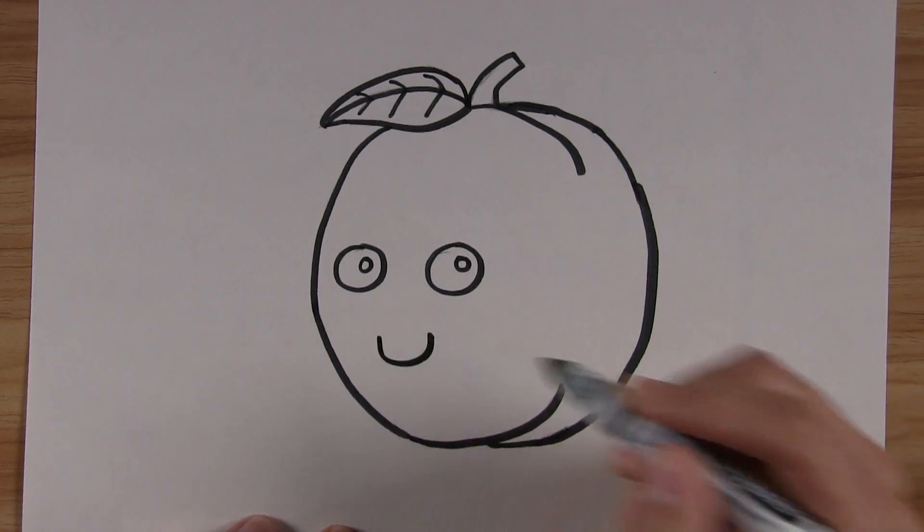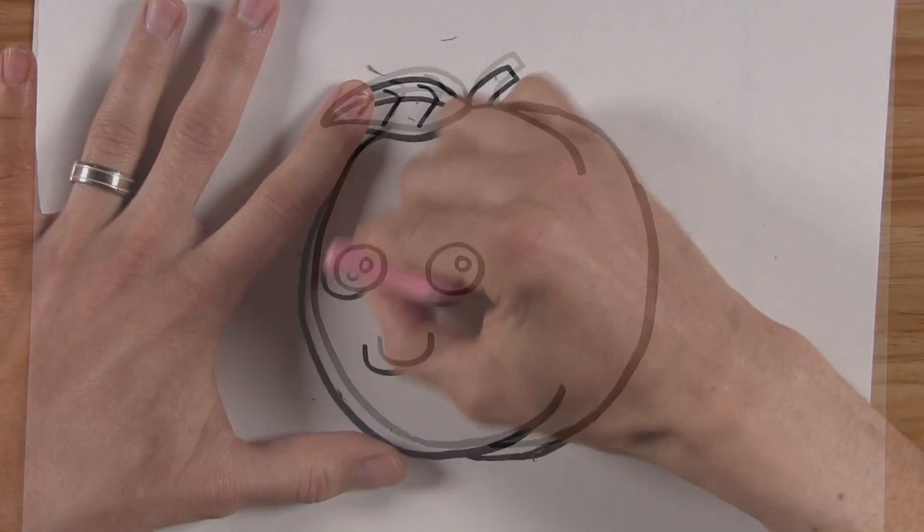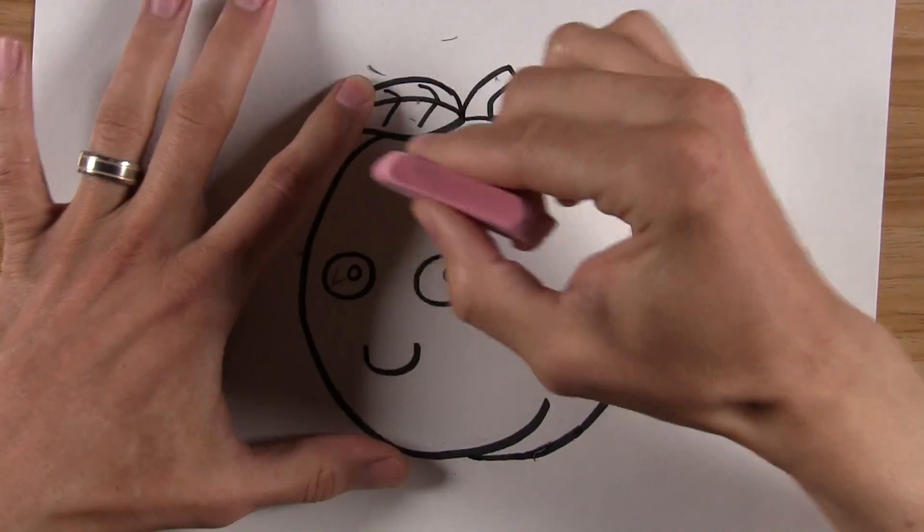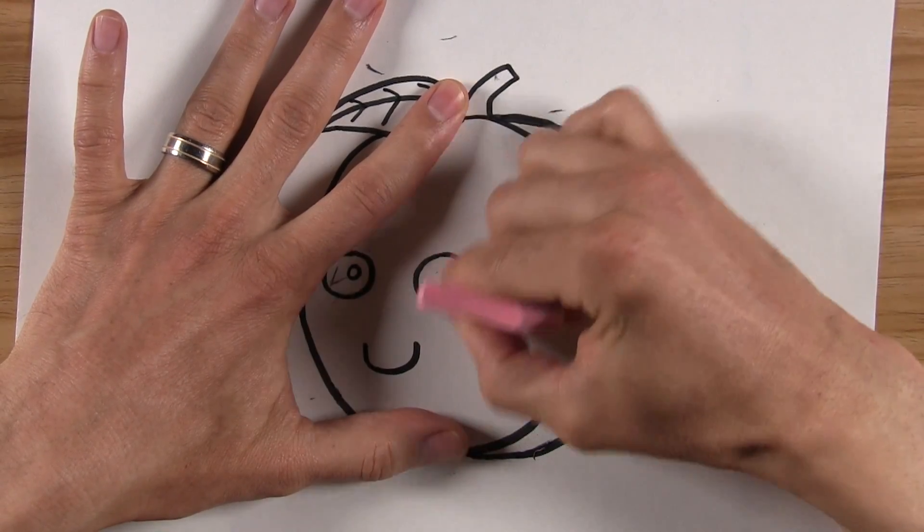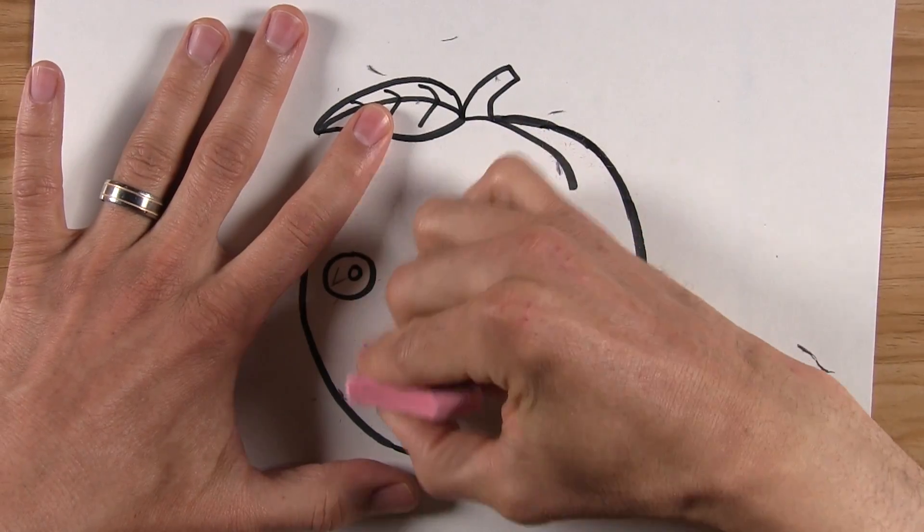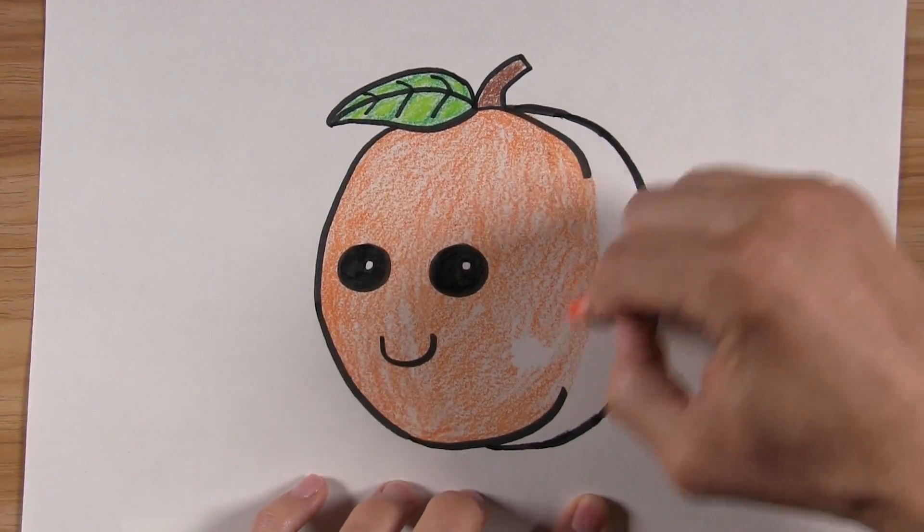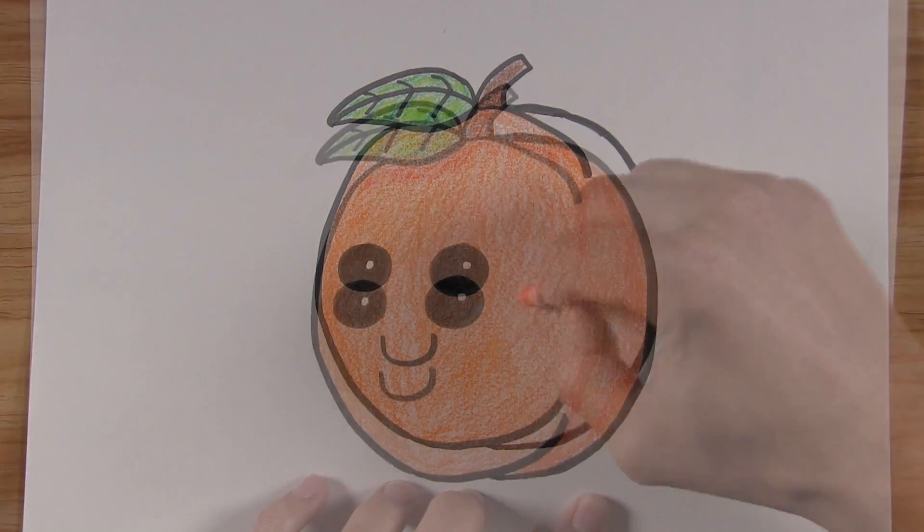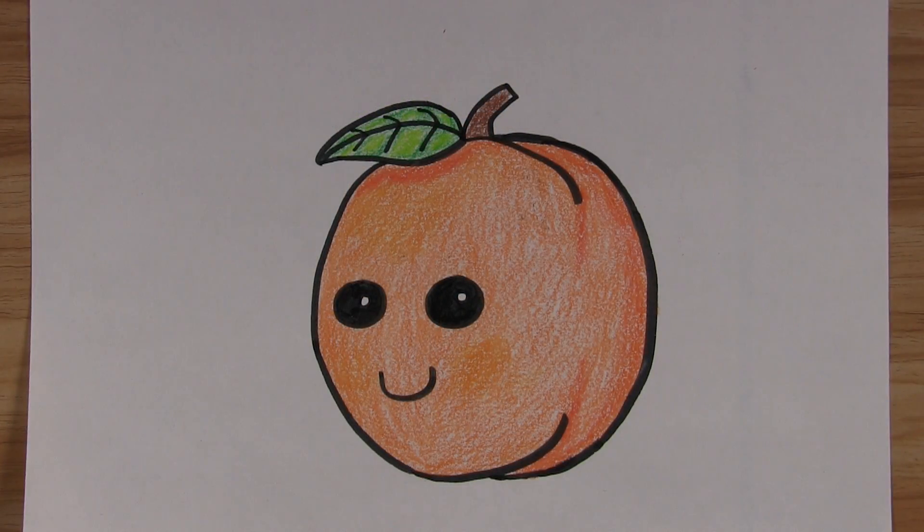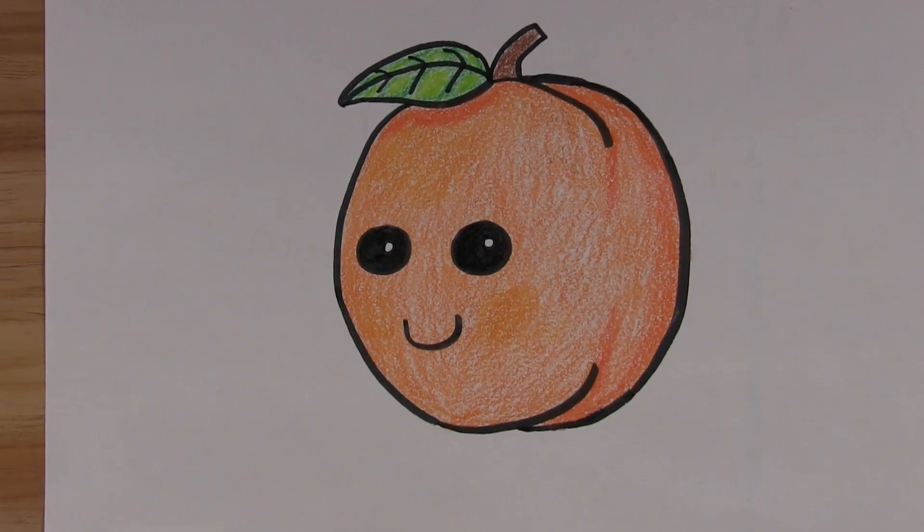Now let's color. Use markers, color pencils, or crayons, whatever you want. I decided to trace over my pencil lines with marker and then erase the pencil marks underneath. After that, I just added a splash of color with crayons. And that is how you draw a cute peach.